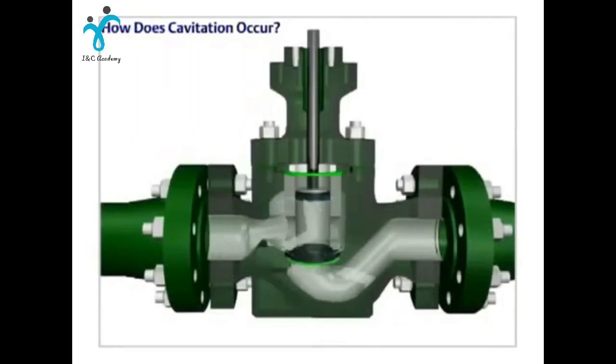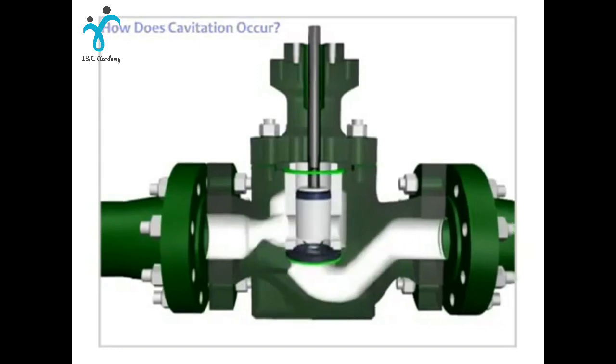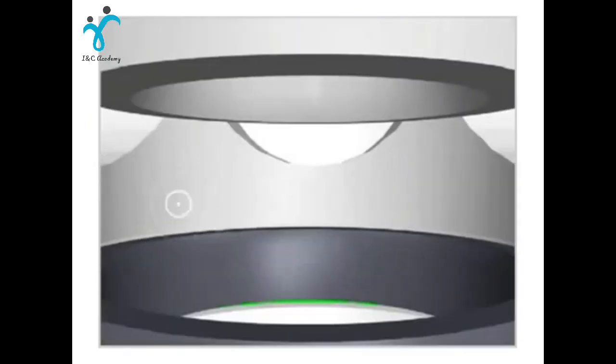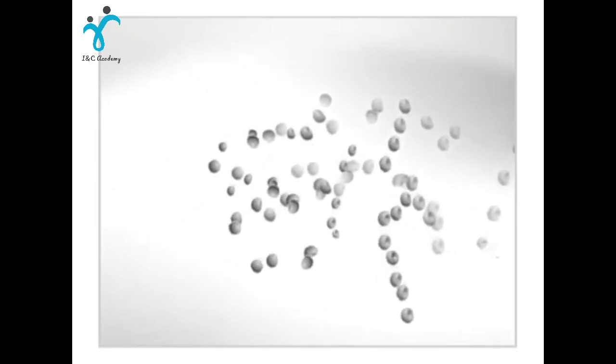Cavitation occurs as a liquid passes through a restriction, such as a valve. The restriction causes the liquid's velocity to increase and its pressure to decrease. The point of maximum velocity and minimum pressure is called the vena contracta. Vapor bubbles form in the liquid when the pressure falls to near the level of the liquid's vapor pressure. When the pressure recovers downstream, the vapor bubbles implode and return to liquid form.